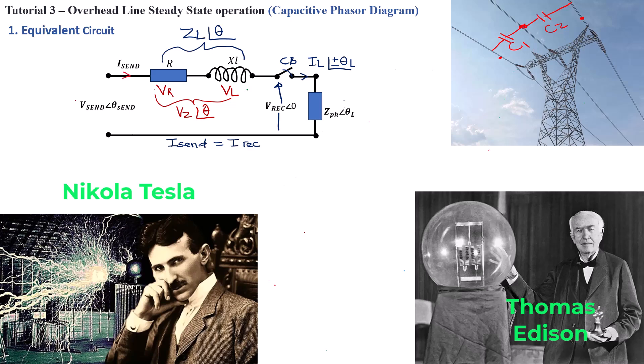In the end, Thomas Edison had a point, but it is practically impossible to transmit power efficiently in DC over a long distance.